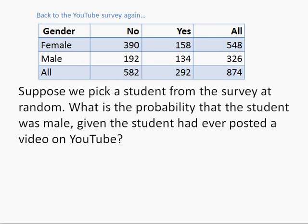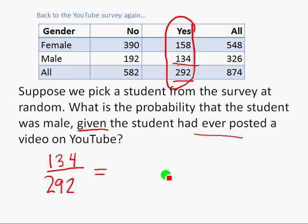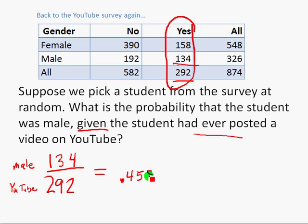One last look at the YouTube survey. We pick a student at random and find the probability the student was male, given that the student had ever posted a video on YouTube. The word 'given' tells us to focus on those who posted on YouTube — the yes people. We look only at those 292 people who had posted on YouTube, and find how many were male: 134 males out of 292. So the probability that a student was male given they had posted on YouTube is 134 out of 292, which is 0.4589.